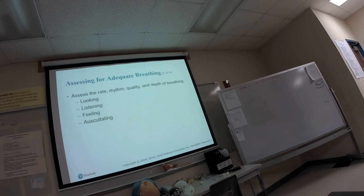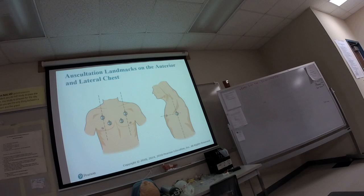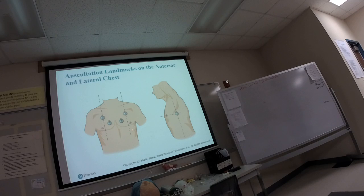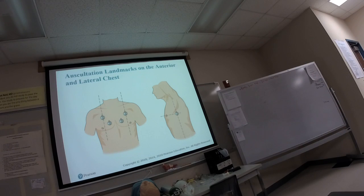We listen for clear and equal breath sounds, and we can also feel the rise and fall of the chest. When auscultating lung sounds, you don't necessarily need to listen to all different points. I listen to the apexes at the top and then the bases. It's actually best to listen on the back — you get better sounds off the back than the anterior. A quick reference: just listen to the apexes and the base of the lung.